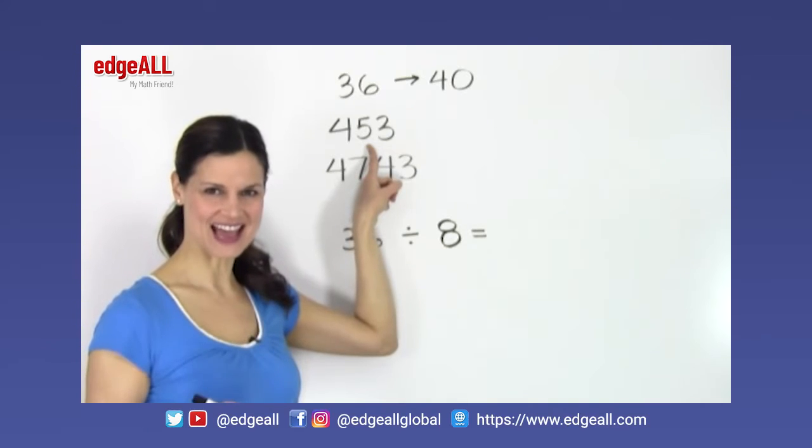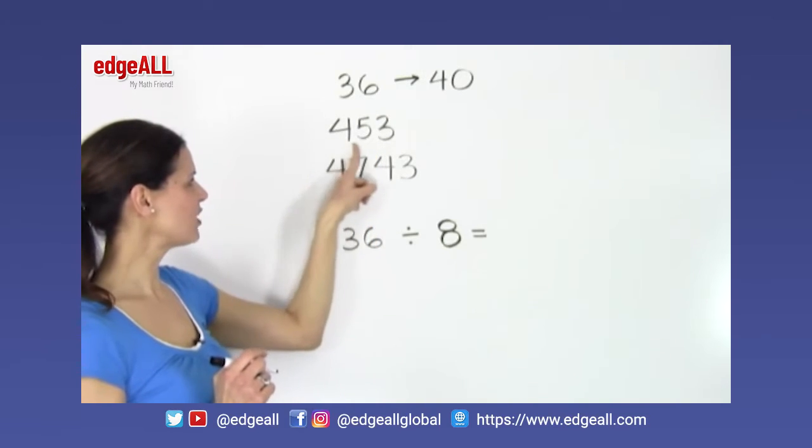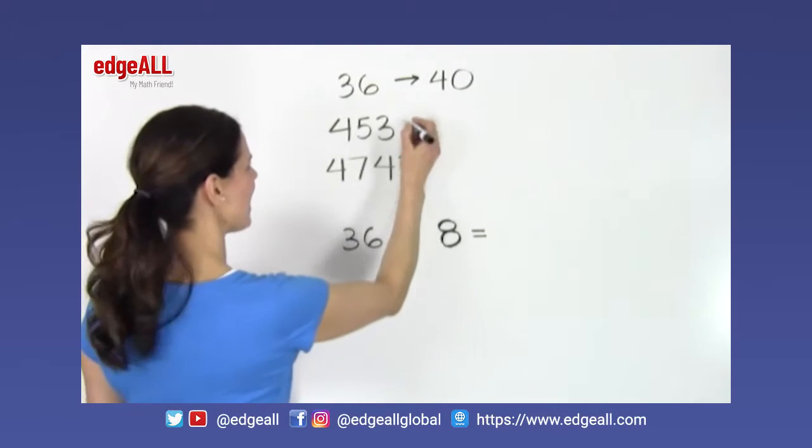If it's 4 or less, I round down. So 453 rounds up to 500.